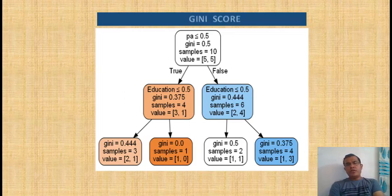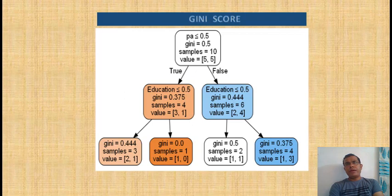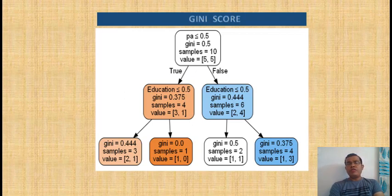Hey everyone, good morning, welcome to the channel 'Learn Data Science with Pranjal'. In this knowledge video I will talk about Gini score, which is used along with entropy in decision trees. I will take one example where I will calculate the Gini score and then build and plot the decision tree using the Gini score, which will help us verify our calculations. Let's see a small theory first and then take one example.